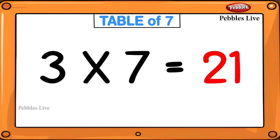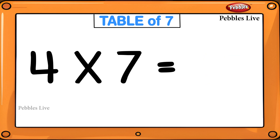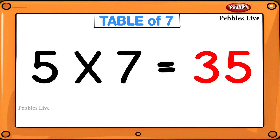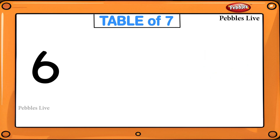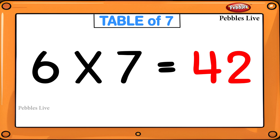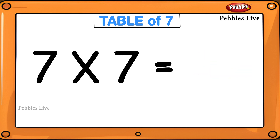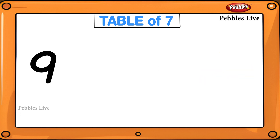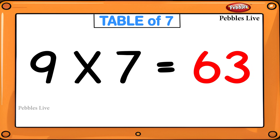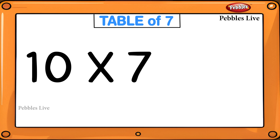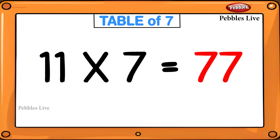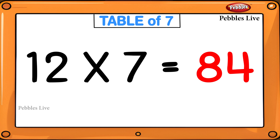1 seven is 7, 2 sevens are 14, 3 sevens are 21, 4 sevens are 28, 5 sevens are 35, 6 sevens are 42, 7 sevens are 49, 8 sevens are 56, 9 sevens are 63, 10 sevens are 70, 11 sevens are 77, 12 sevens are 84.